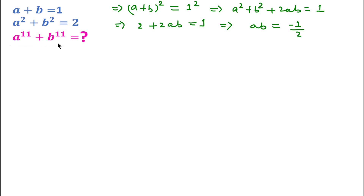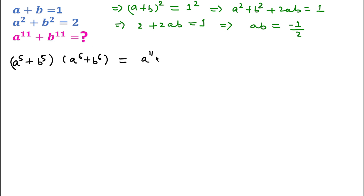Since we have to find a to the power 11 plus b to the power 11 and there is no direct formula, I will use a to the power 5 plus b to the power 5 and a to the power 6 plus b to the power 6. If we multiply these two, we get a to the power 11, plus a to the power 5 times b to the power 6, plus b to the power 5 times a to the power 6, plus b to the power 11.